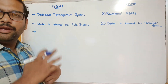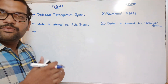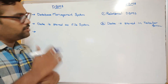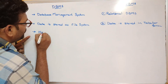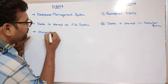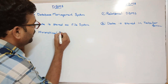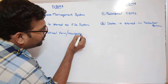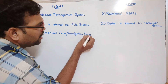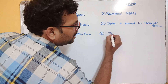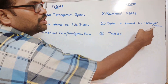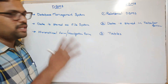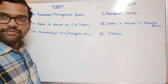To access data in DBMS, since it is stored in the file system, we require a navigational or hierarchical format to represent and access the data. In RDBMS, data is represented in tables, so we can easily access data from tables rather than using a hierarchical or navigational form.